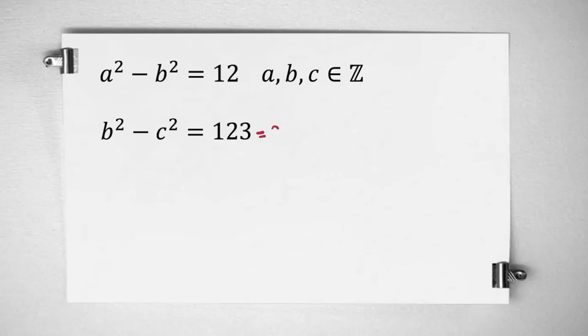We should focus on one of the equations. Because 123 is 3 times 41, we factorize. b squared minus c squared is a famous identity: b minus c times b plus c equals 3 times 41.